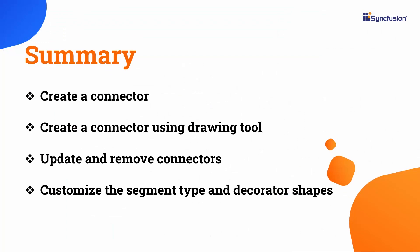In this video, we have seen how to create a connector in the code behind of the diagram component to connect two nodes. We have also seen how to draw a connector using the drawing tool, and how to update and remove the connector from the diagram canvas. Lastly, we have seen the different types of segments and decorator shapes. If you would like to see the example used in this video, you can download it from the GitHub link in the description below. I have also provided a link where you can see if you qualify for a free license key to use our Blazor products through our community license. If you found this video useful, please like it and subscribe to our channel. Thanks for watching.